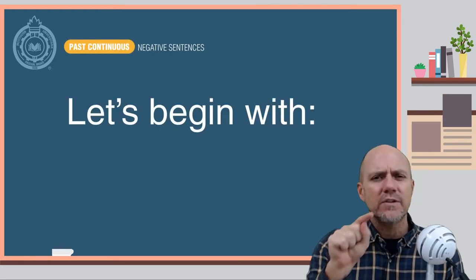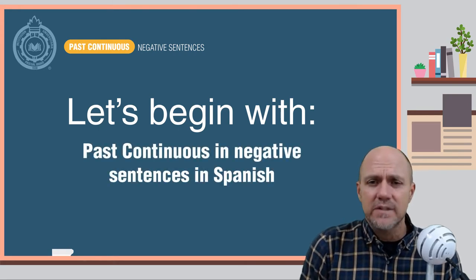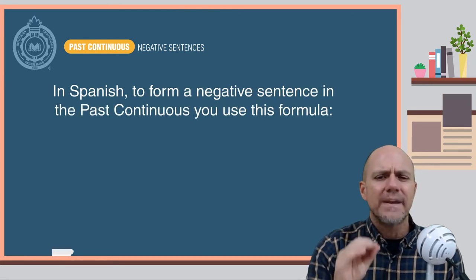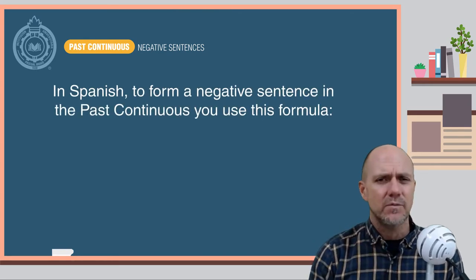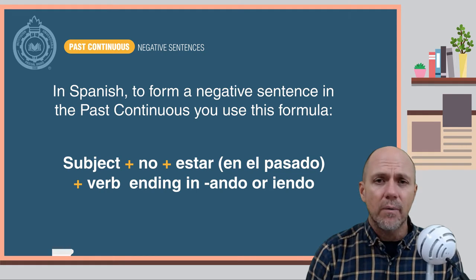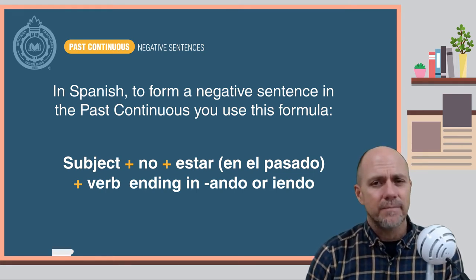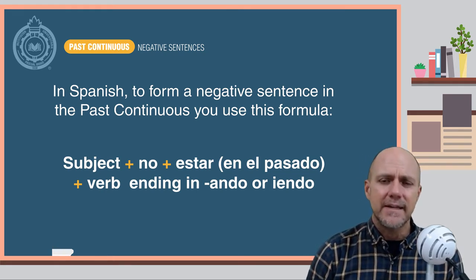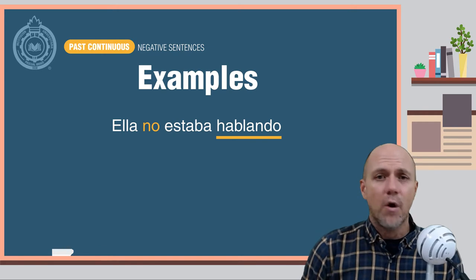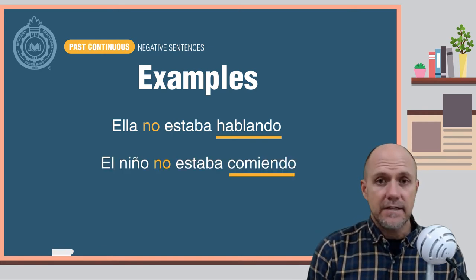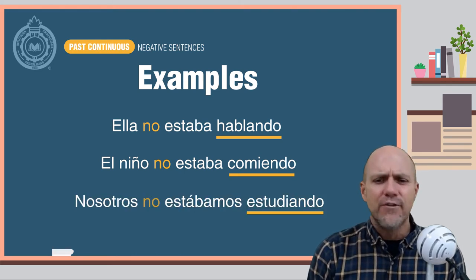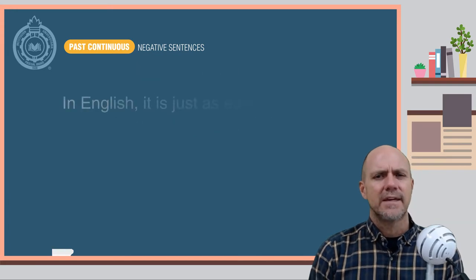Let's begin with what you already know: the past continuous in Spanish in negative sentences. In Spanish, to form a negative sentence in the past continuous, you follow this formula: the subject, plus no, plus estar en el pasado, plus the verb ending in ando o yendo. Here are some examples: Ella no estaba hablando. El niño no estaba comiendo. Nosotros no estábamos estudiando.